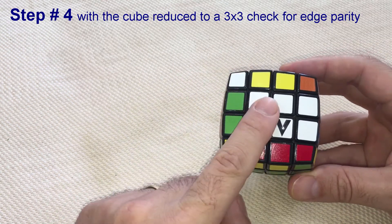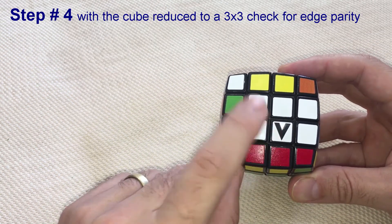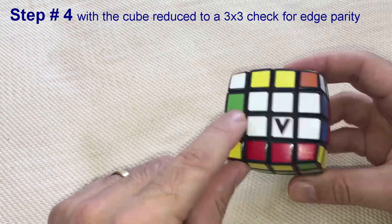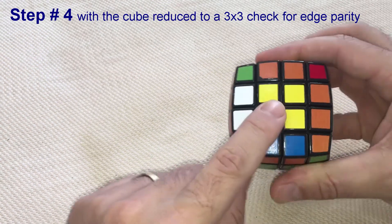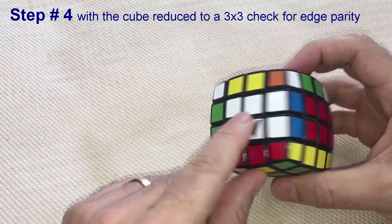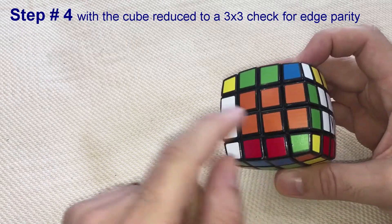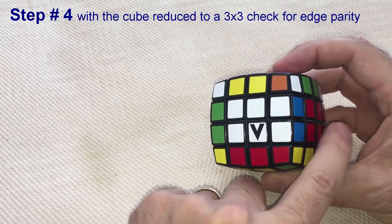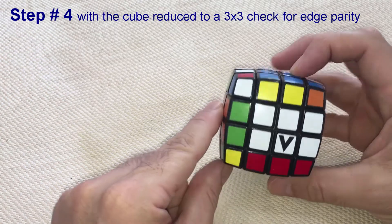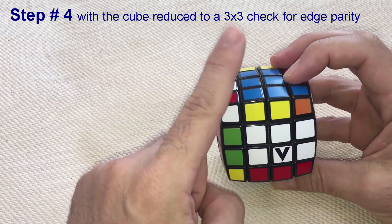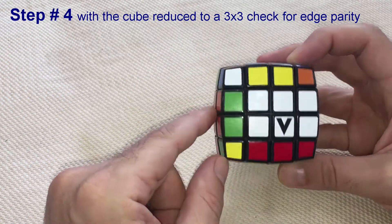Choose a front and a back color. Let's choose white in the front and yellow in the back. Now, choose two side colors. Let's choose orange and red for the sides. Finally, keep the blue on top and the green on bottom, and just ignore them.